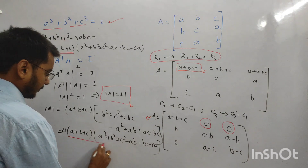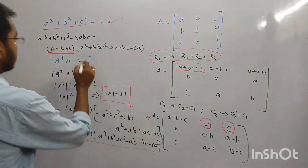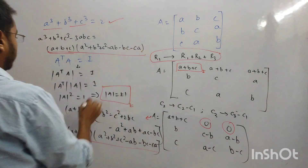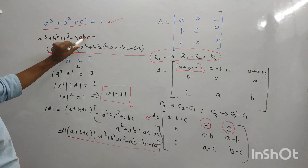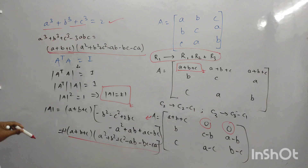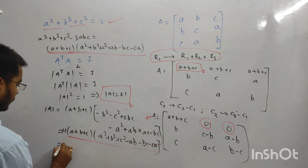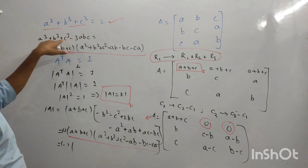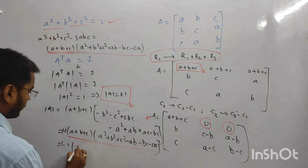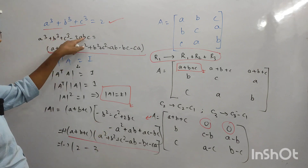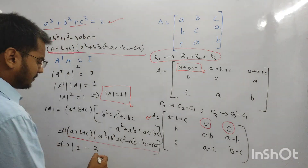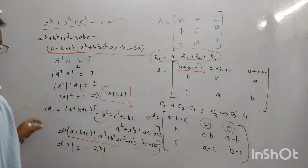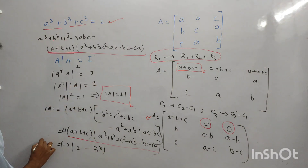यह expression हमें मिल रहा है — यानी |A| = -(a³ + b³ + c³ - 3·ABC). दिया है a³ + b³ + c³ = 2 और ABC को X मान लेते हैं। तो |A| = -(2 - 3X). और |A| = ±1.